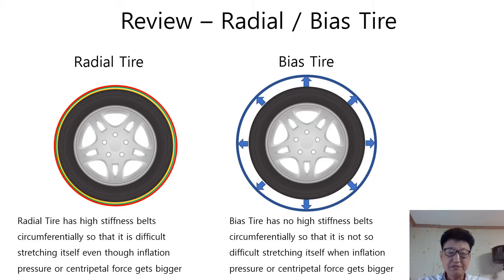This is a review of effective radius for both of radial and bias tire. A radial tire has high stiffness belts circumferentially so that it is difficult stretching itself even though inflation pressure or centripetal force gets bigger. As you can see, without strong belts, the rolling radius is bigger. There are many strong belts noted as red, green, yellow, and can be many more.